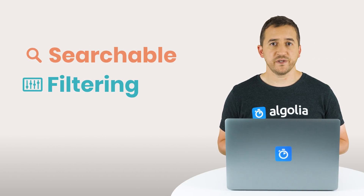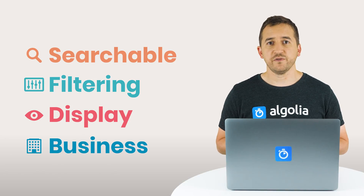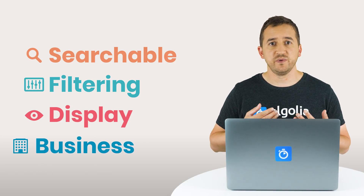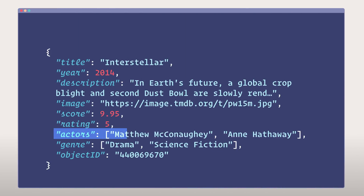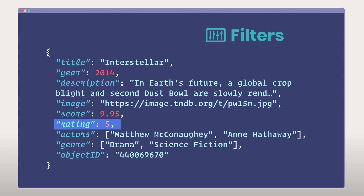Searchable, filtering, display, and business — these are the four types of attributes that can be leveraged to build your search. Some attributes can fall into multiple categories. Actors or genre can be searchable but also used as filters. The star rating could be used as a filter but also as a custom ranking.